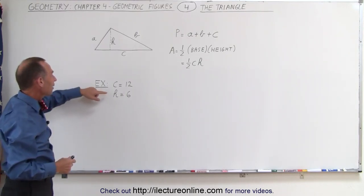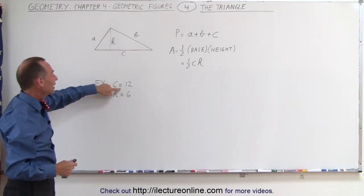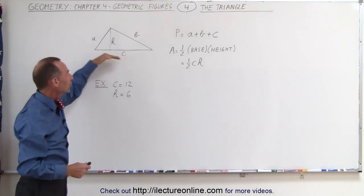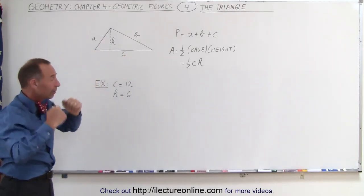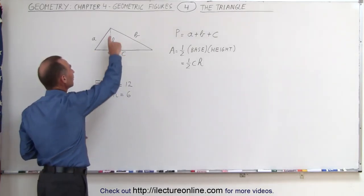As an example, here we have a triangle which we're given the length of the longest side, which we in this case call the base because it's the bottom of the triangle, and we're also given the height.